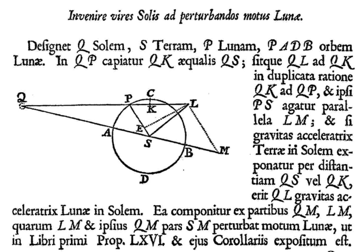Lunar theory includes the background of general theory, including mathematical techniques used to analyze the Moon's motion and to generate formulae and algorithms for predicting its movements, and also quantitative formulae, algorithms, and geometrical diagrams that may be used to compute the Moon's position for a given time, often by the help of tables based on the algorithms. Lunar theory has a history of over 2,000 years of investigation. Its more modern developments have been used over the last three centuries for fundamental scientific and technological purposes, and are still being used in that way.